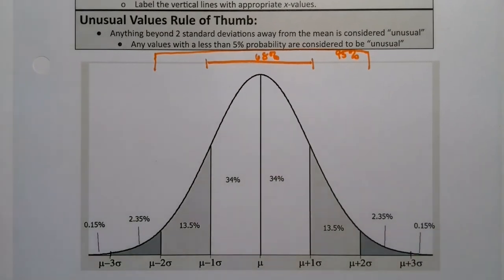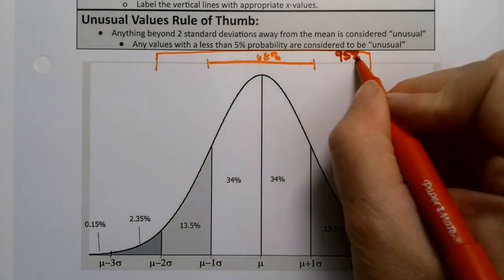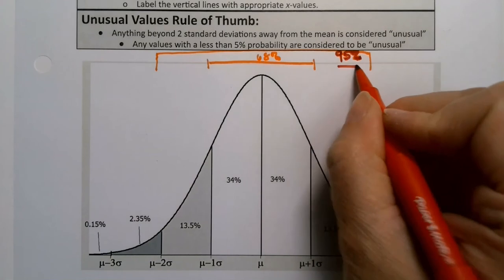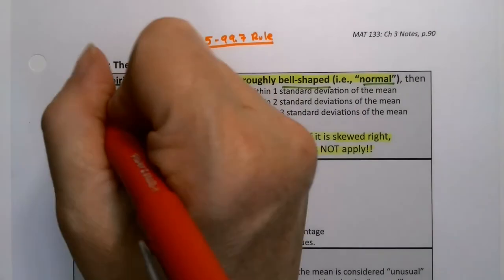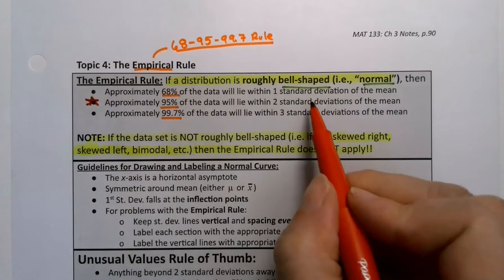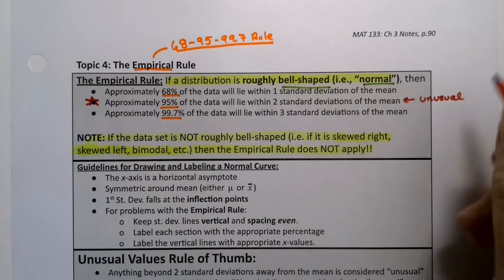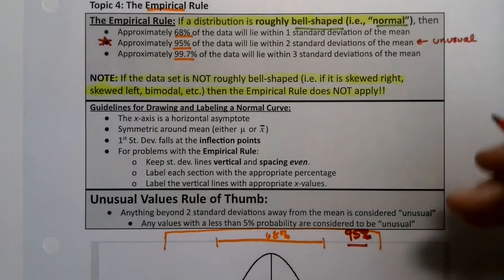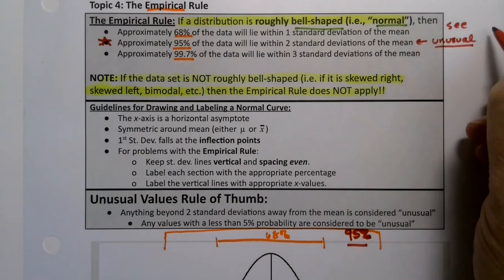Now there are a few more things to make note of. 95% lying within two is actually a really common one. We use that one a lot. Of those three numbers, the one that we use the most often is the 95%. Remember that unusual is less than 5%, or I wrote it down here. So see the unusual part below.